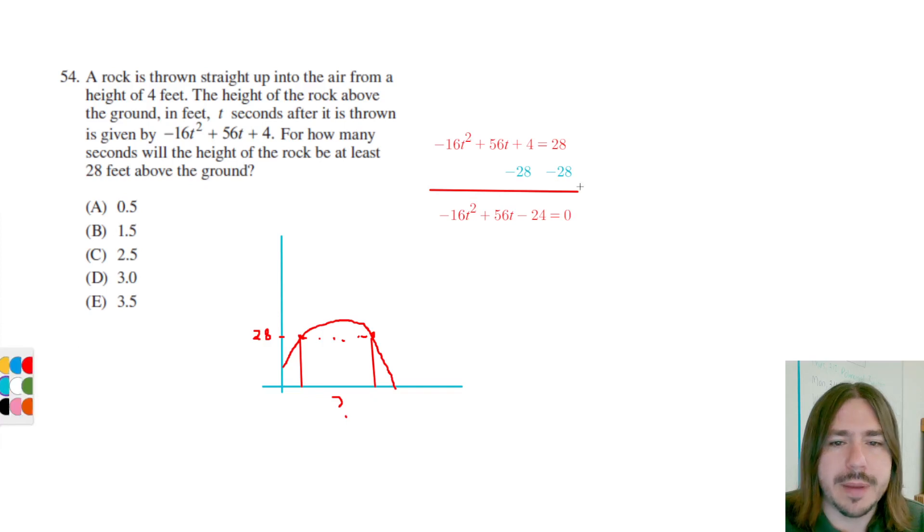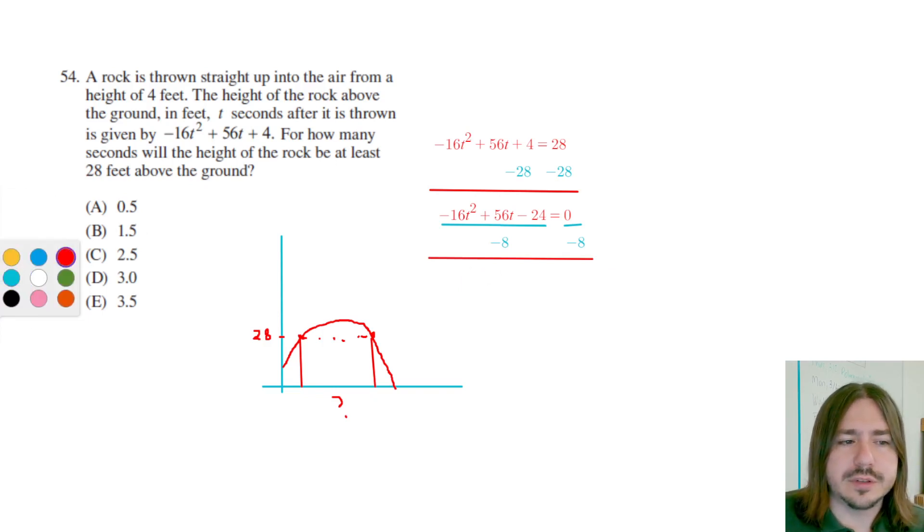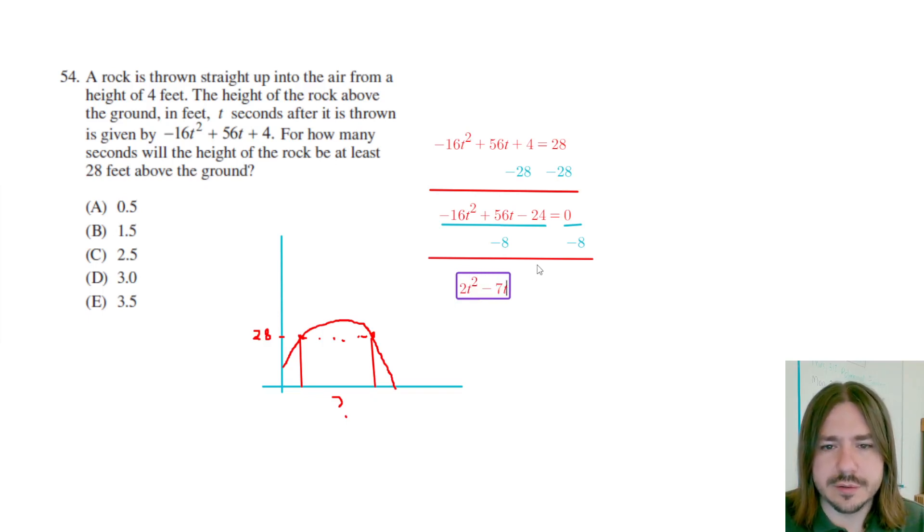So I'm going to divide everything by negative eight, because when I factor, the factoring will be easier if that leading coefficient is positive. So I'm going to force that to be positive by dividing both sides by negative eight. So that gives me 2t squared minus 7t plus three. So negative 16 divided by negative eight is two. 56 divided by negative eight is negative seven, and negative 24 divided by negative eight would be positive three.